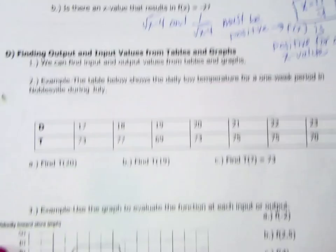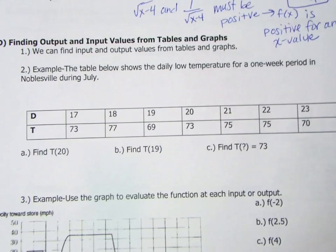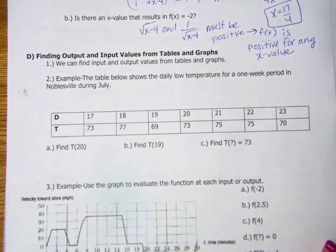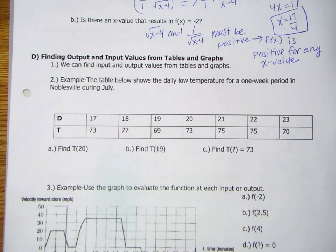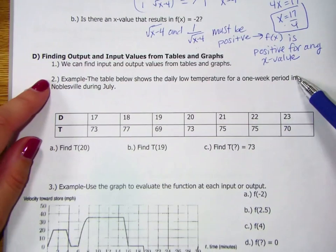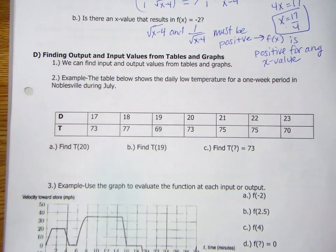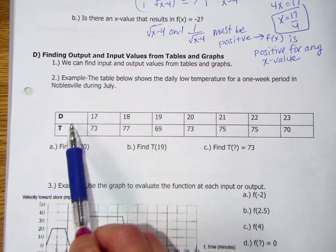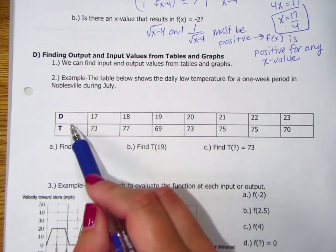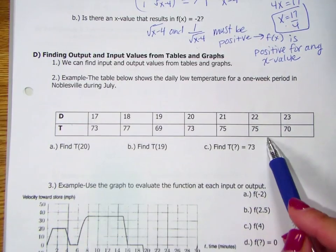Last thing here, finding input and output values from tables and graphs. We've done this a little bit already in our first unit. The first example says the table below shows the daily low temperature for a one-week period. And really, we've done examples almost identical to this. So it's giving you the date in July. It's giving you the low temperature.